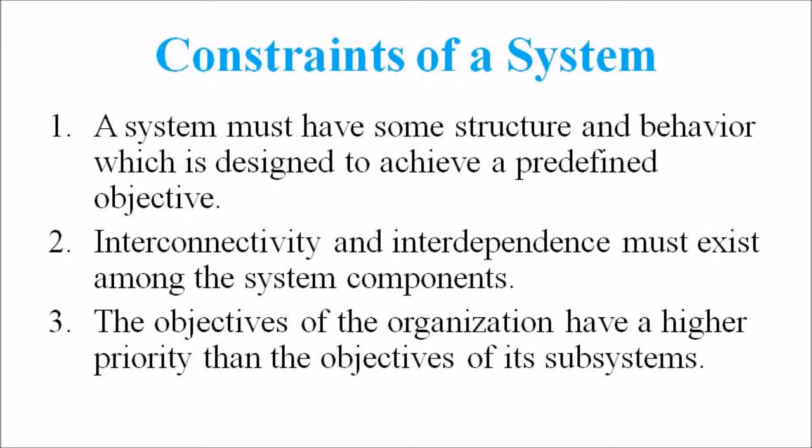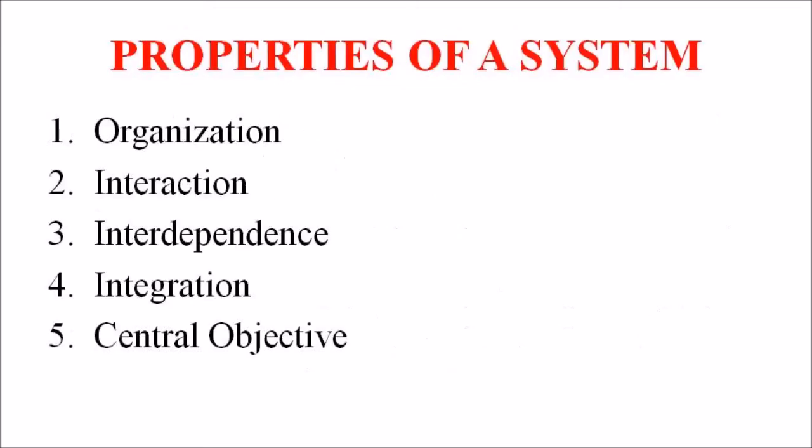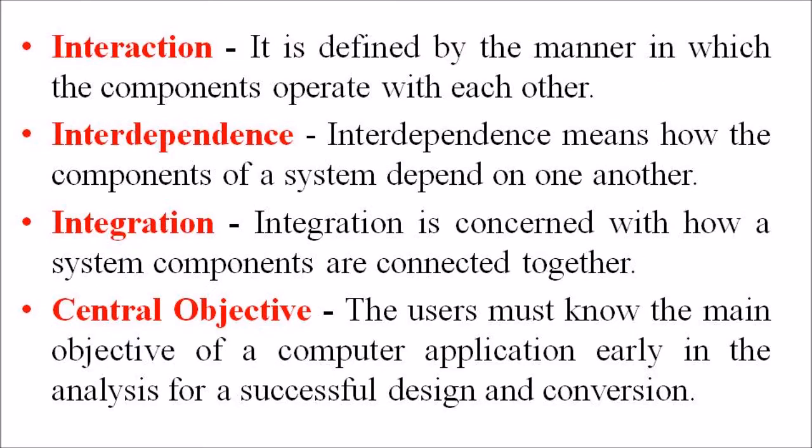For example, traffic management system, payroll system, automatic library system, human resource information system, etc. are examples of these objectives of an organization. So there arises another question — what are the properties of a system? The system has the following properties: organization, interaction, interdependence, integration, as well as central objectives.